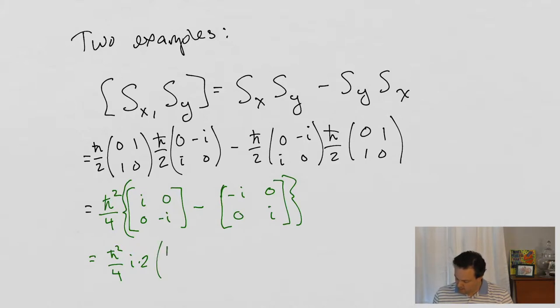And then minus i minus i is minus two i. And so I have a one minus one. I pulled out the two zero zero. That's kind of cool. So this is h-bar squared over two times i times one zero zero minus one.